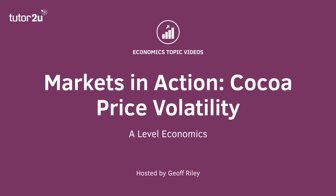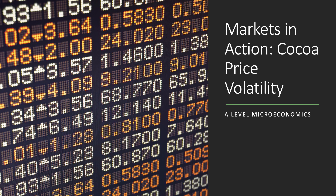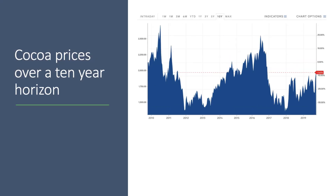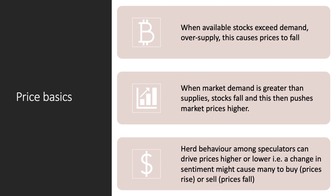Welcome to a micro video looking at the cocoa market. We're going to focus on the industry and think about some of the demand and supply factors that make global cocoa prices especially volatile from month to month and year to year. The chart tracks cocoa prices measured in dollars per tonne over the last 12 months. You can see the volatility in the world price of cocoa, and over a 10-year horizon it is also quite significant — although note the y-axis has been shortened, which tends to exaggerate the movements up and down in price. Cocoa is clearly a market where there is a lot of price volatility.